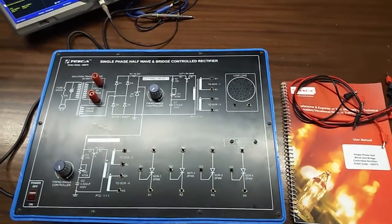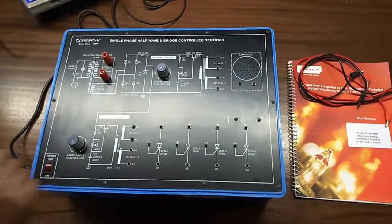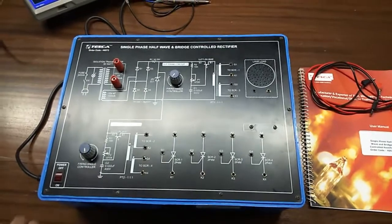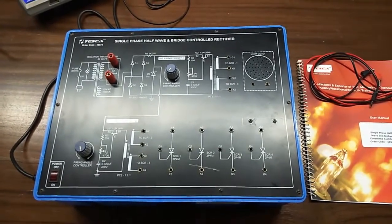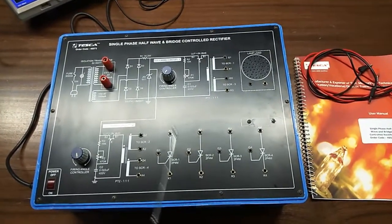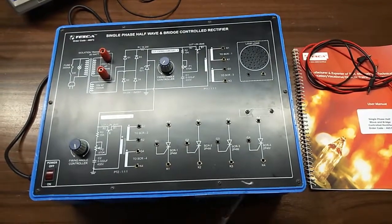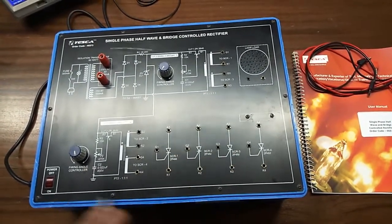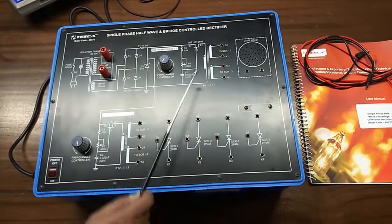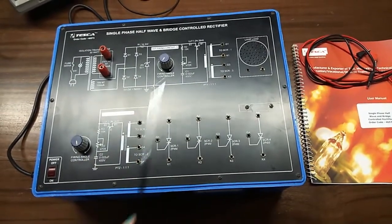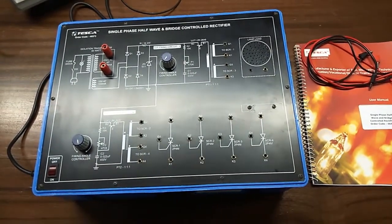This is the trainer kit of single phase half wave and bridge controlled rectifier. These are the mimic diagrams given here on the trainer kit. There are 4 SCRs. You can see here this is the lamp load, this is transformer, there is UJT firing circuit 1 and this is the second UJT firing circuit.